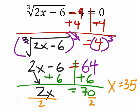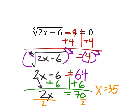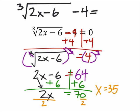Now again, if you stop there, just don't, okay? Because we do need to check this. So going back to the original equation, which was the cube root of 2x minus 6, this is going to be minus four. Does this equal zero?